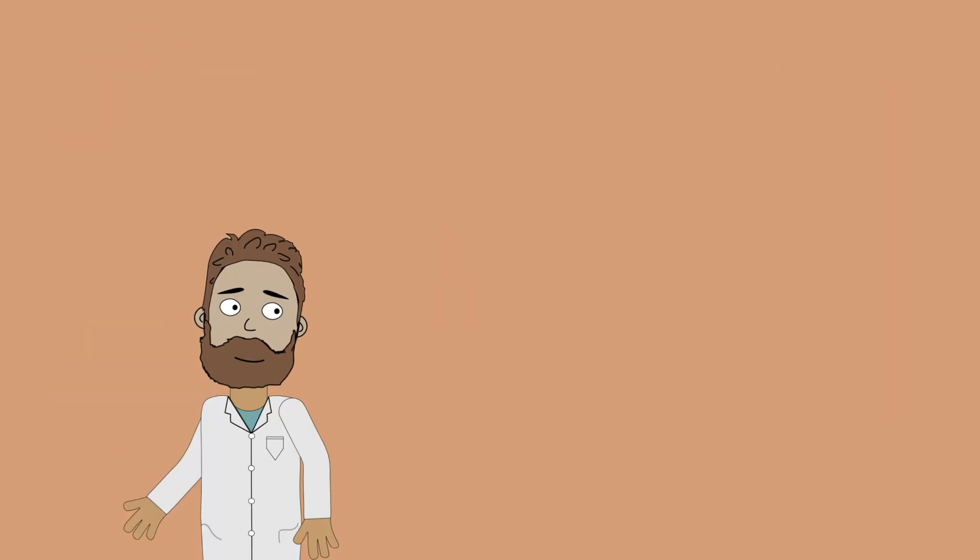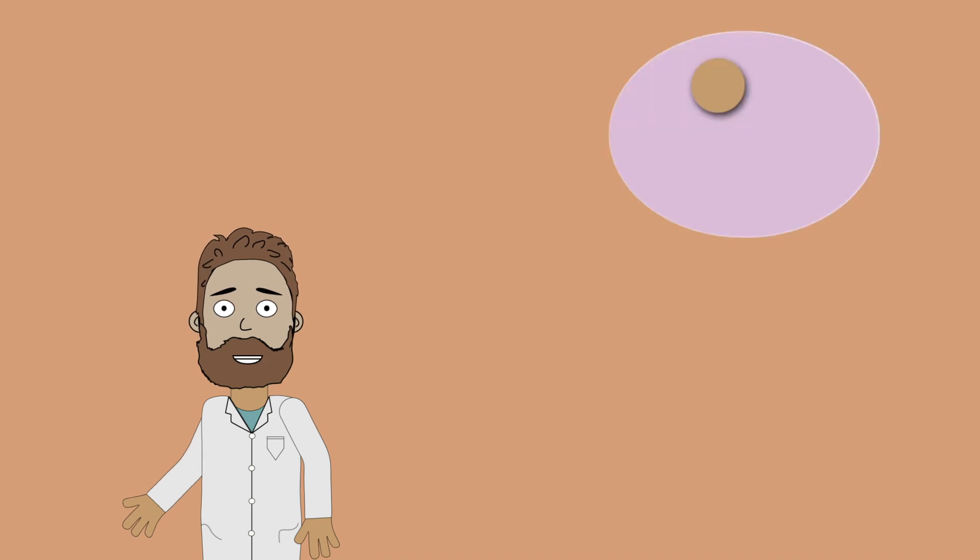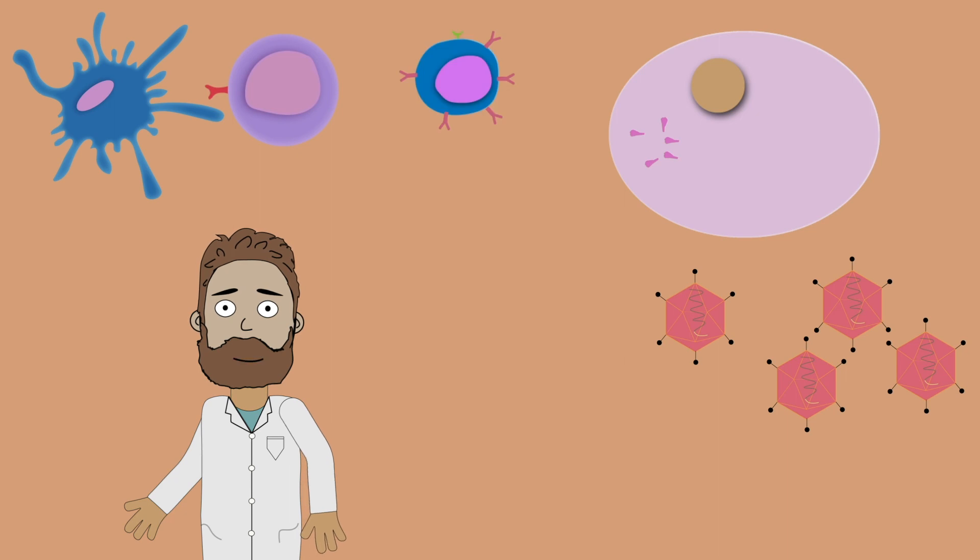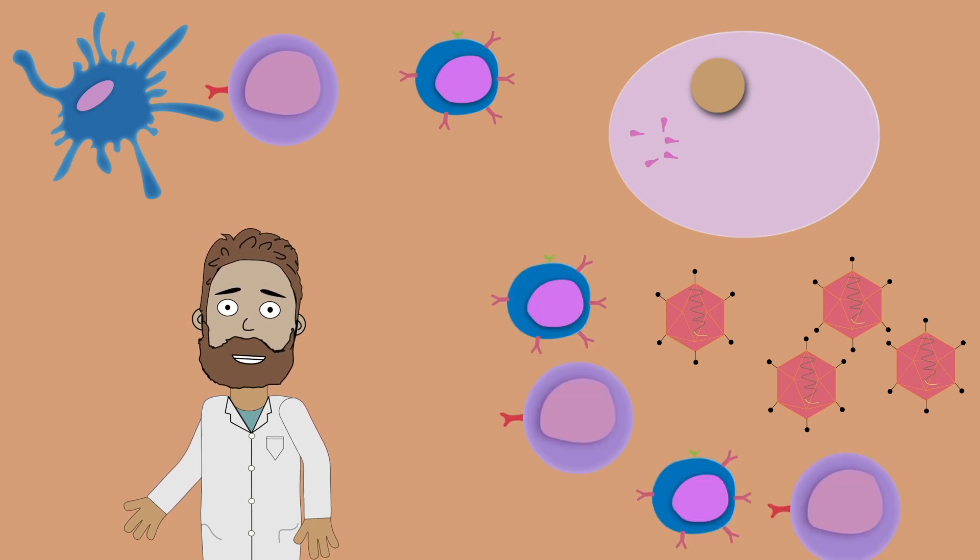But during the development process, the scientists have a very important thing to consider, and that is whether our organism has immunity against the viral vector itself. For example, in some cases of COVID-19 vaccines, the immune system initially responded very well, but because some people had pre-existing immunity to the viral vector, the response was limited.